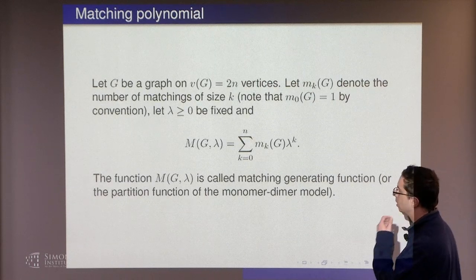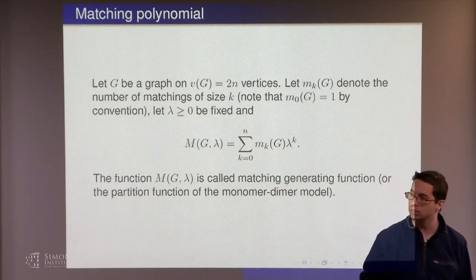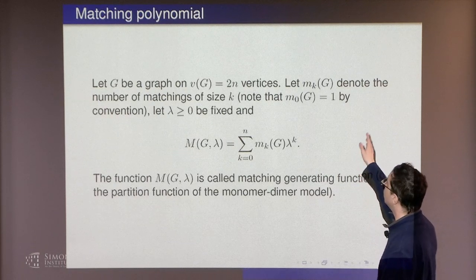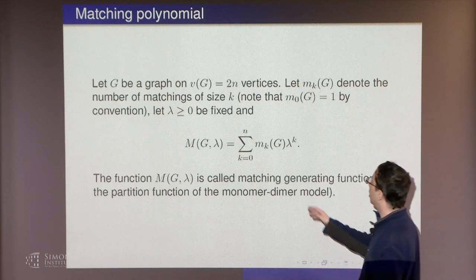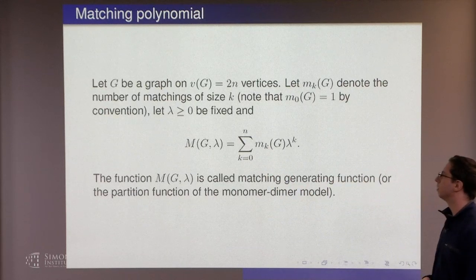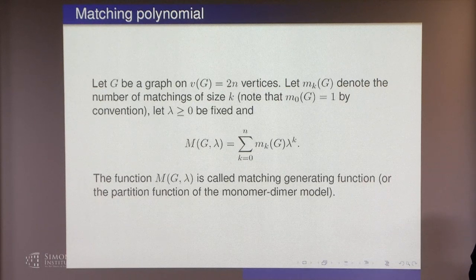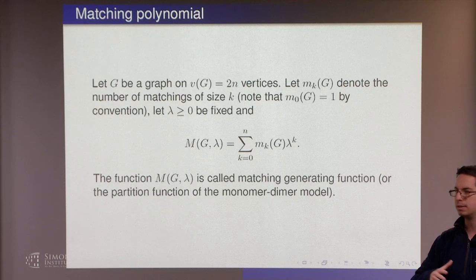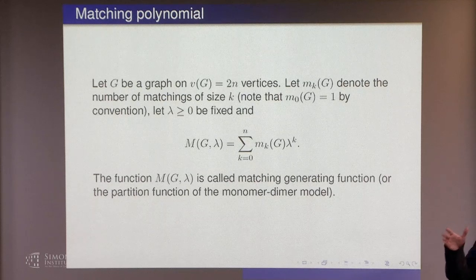A last application — it's a bit more involved. We have a graph G and let M_k(G) denote the number of matchings of size k. We choose some lambda and consider the sum of M_k(G) * lambda^k. In mathematics this is called the matching generating function; in statistical physics it's the partition function of the monomer-dimer model.